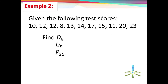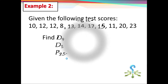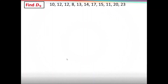Another example: given the following test scores — 10, 12, 12, 8, 13, 14, 17, 15, 11, 20, and 23 — let's find D sub 9, D sub 5, and P sub 35. First, let's find D sub 9.